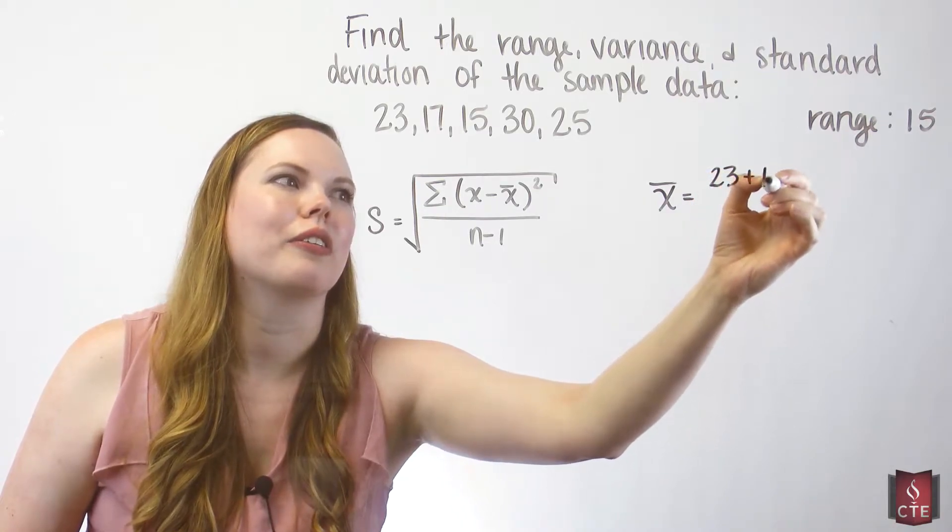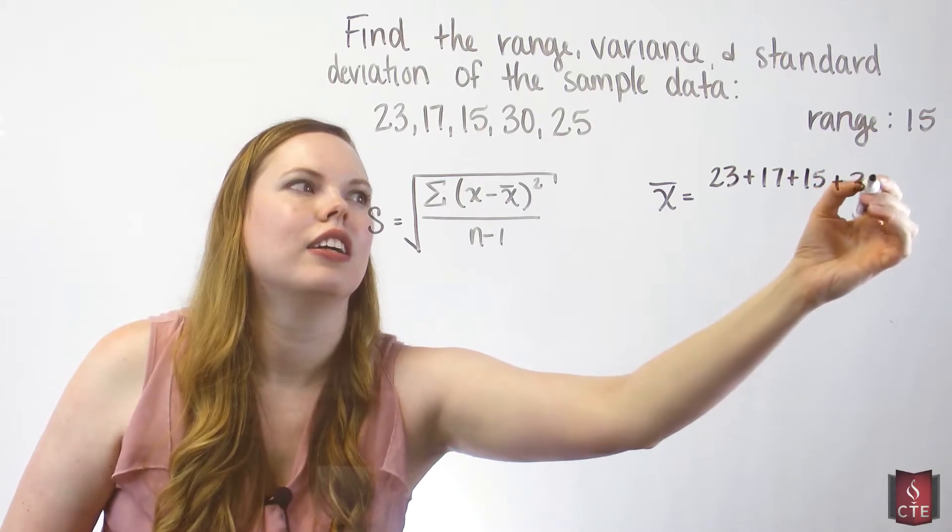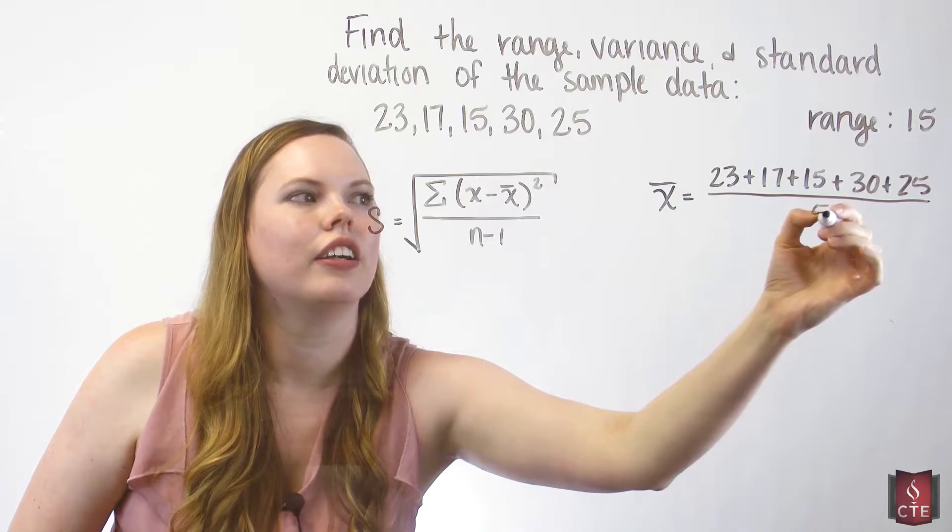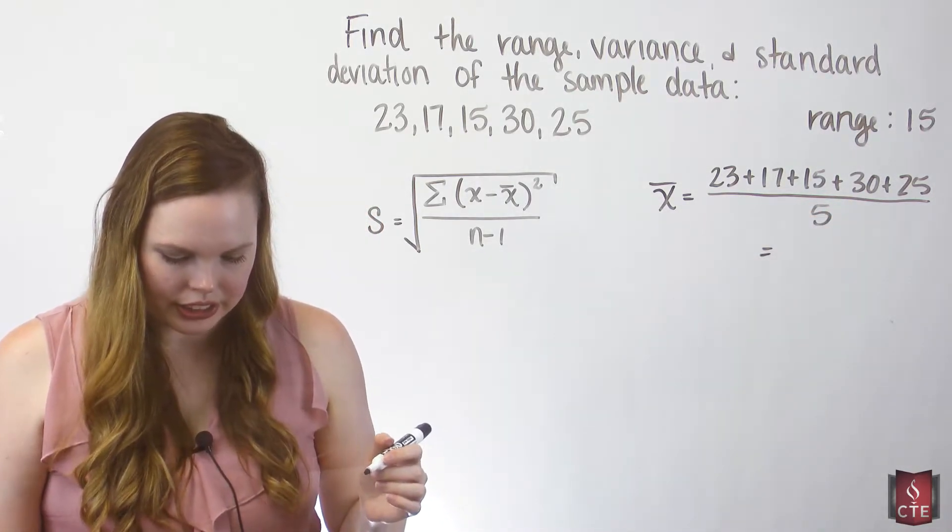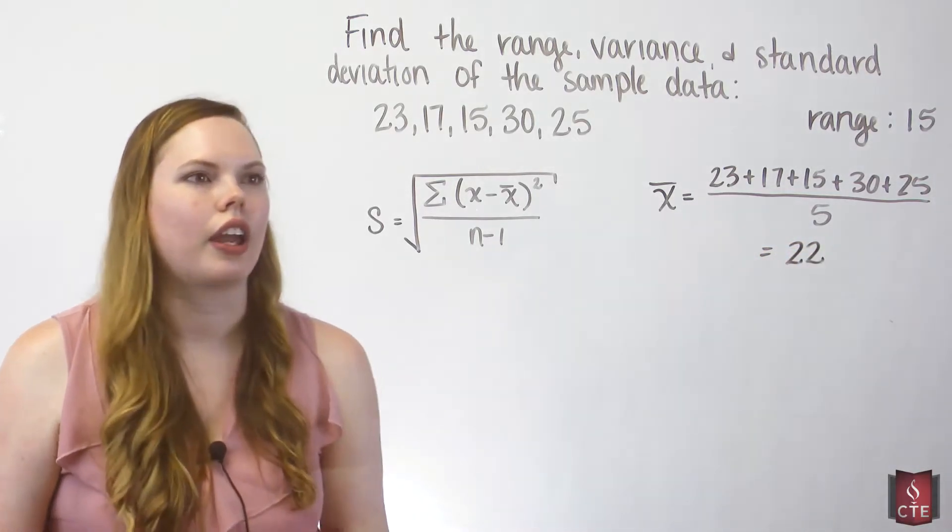So I'm going to do that by hand real quick so you can see it. We're going to divide by 5. So our mean here is, when we do this, is 22.